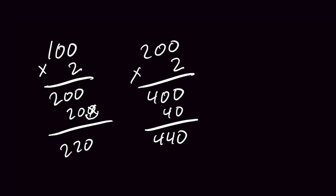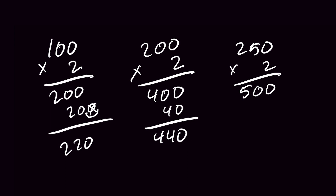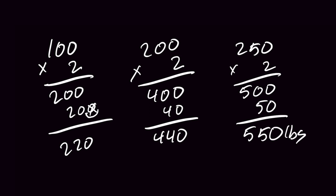Let's do something slightly tougher: 250 kilos. 250 times 2, we get 500. Same thing — we take off that last zero. 500 plus 50 is 550 pounds.